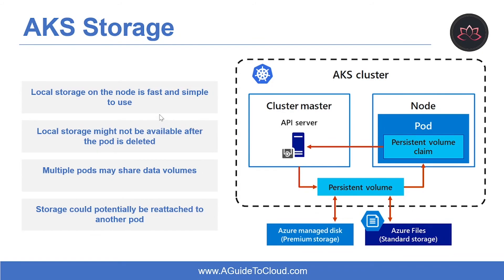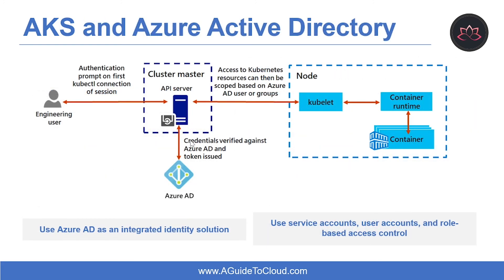Now let's learn about AKS storage. Applications that run in Azure Kubernetes Service may need to store and retrieve data. For some application workloads, this data storage can use local fast storage on the node that is no longer needed when the pods are deleted. Other application workloads may require storage that persists on more regular data volumes within the Azure platform. You can manually create these data volumes to be assigned to pods directly, or have Kubernetes automatically create them. There are two types of data volumes: Azure Disk and Azure Files. Azure Disk can be used to create a Kubernetes data disk resource, and Azure Files can be used to mount an SMB 3.0 share backed by an Azure storage account to pods.